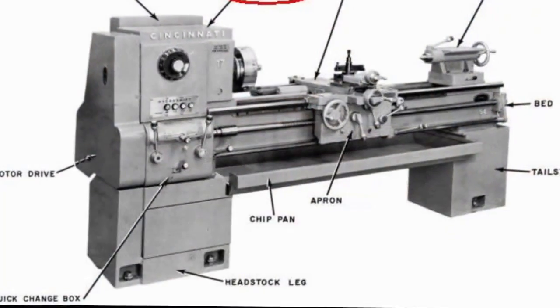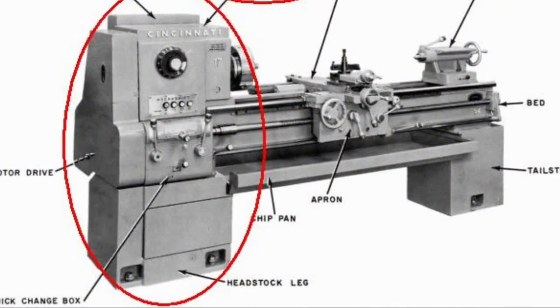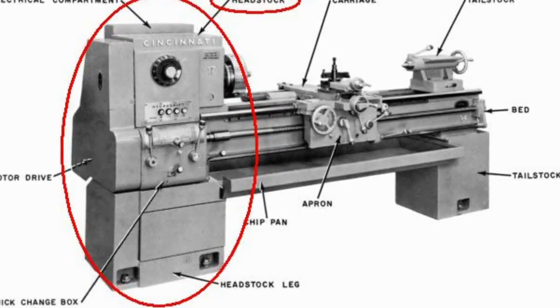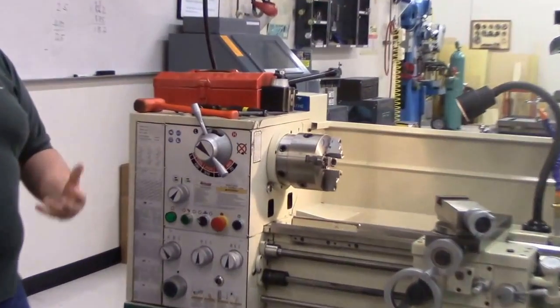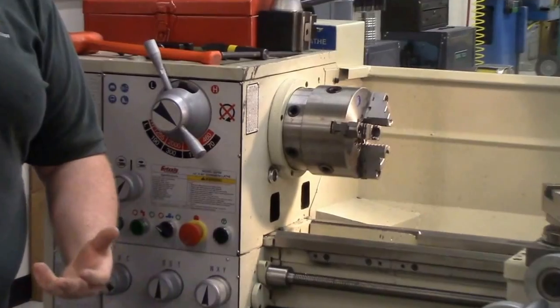The biggest component that you'll see here is right on the left. This is called the headstock. The headstock has your motor, it holds the tool piece, it's the most important part of the machine. It's called the head because it holds your piece.